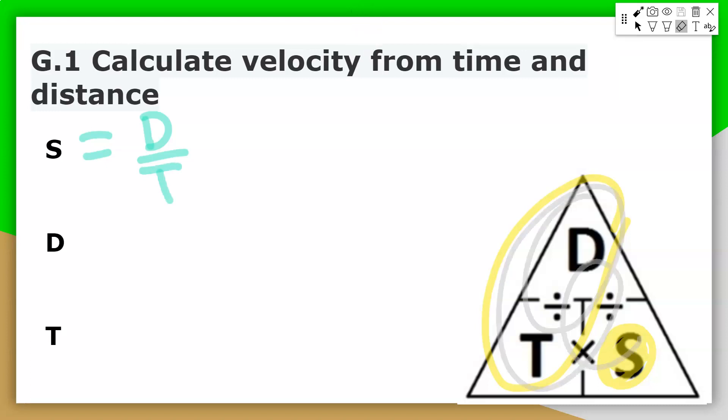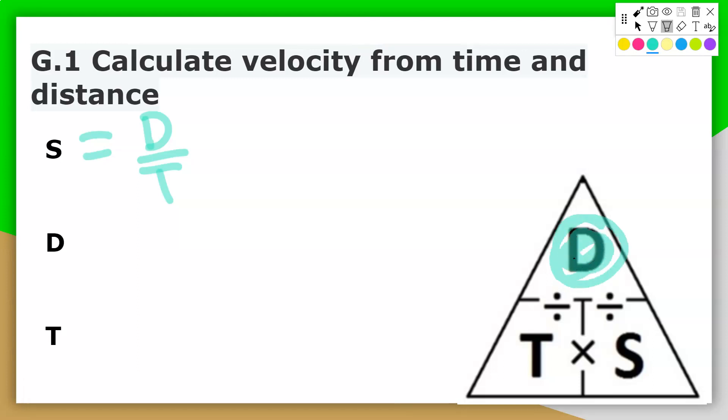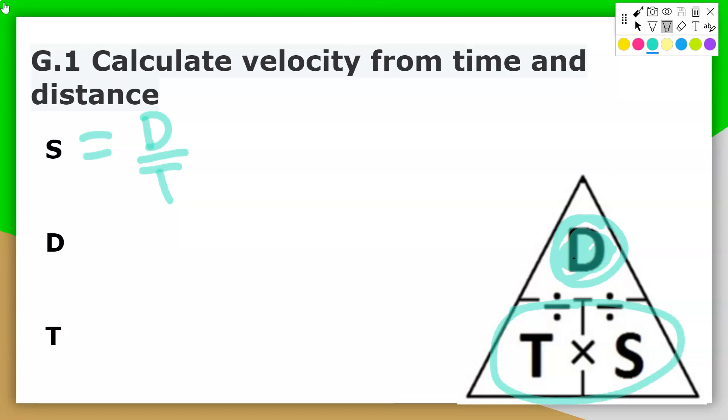This can be done for the other ones as well. If you want to solve for distance, you cover up distance, and you'll notice T and S are side by side. That means you need to multiply those two together. So distance is equal to speed times time.